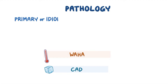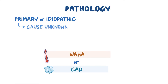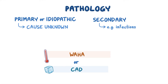Primary or idiopathic WAHA or CAD occurs when the cause of autoantibody production is unknown. Secondary WAHA or CAD occurs as a result of another condition such as certain infections, autoimmune diseases, or cancers.